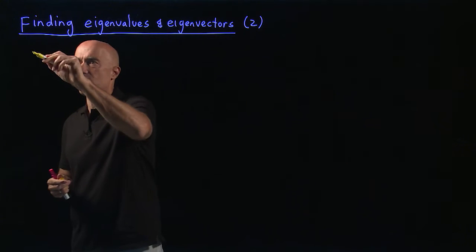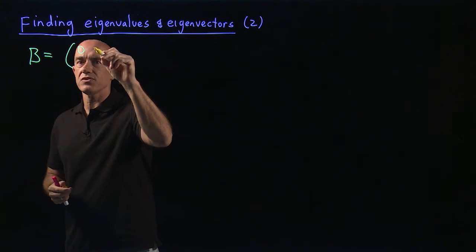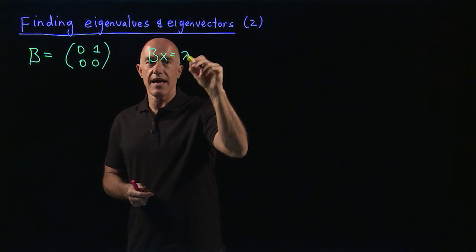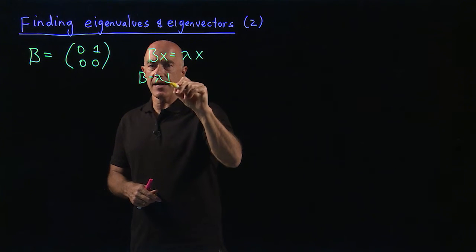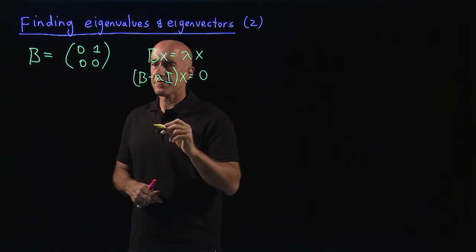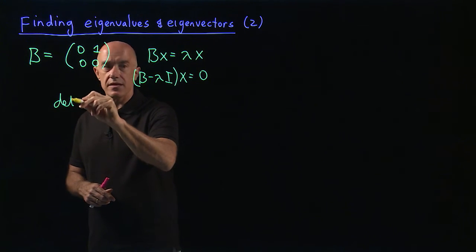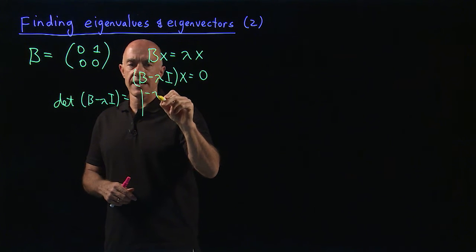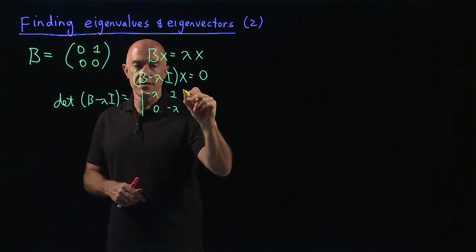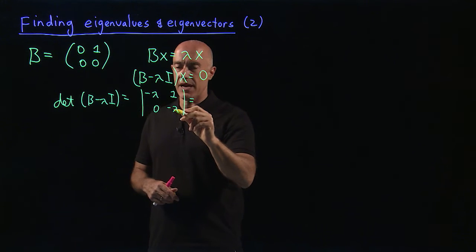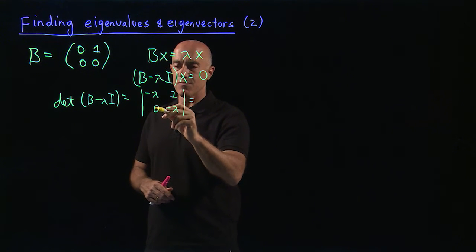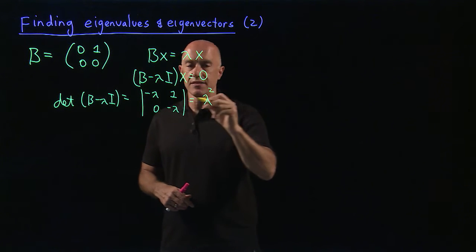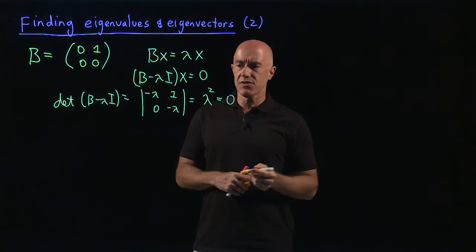The first matrix I want to work with is the simple 2 by 2 matrix B = [[0, 1], [0, 0]]. We're solving Bx equals lambda x, the eigenvalue problem, so B minus lambda I times x equals 0. The determinant of B minus lambda I equals 0. Subtracting lambda from the diagonal gives us the matrix [[-lambda, 1], [0, -lambda]], whose determinant is lambda squared minus 0, so the characteristic equation is lambda squared equals 0.